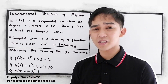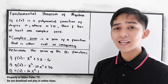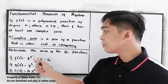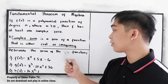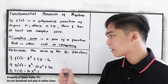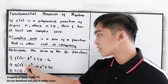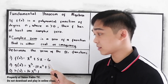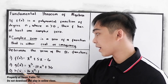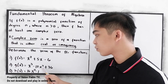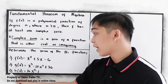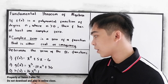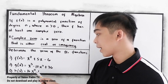So to better understand, let's have these exercises. Determine the zeros of the following functions. Number 1: f of x is equal to x squared plus 5x minus 6. Number 2: g of x is equal to x cubed minus 12x squared plus 36x. And number 3: h of x is equal to 16x raised to the 4th minus 1.